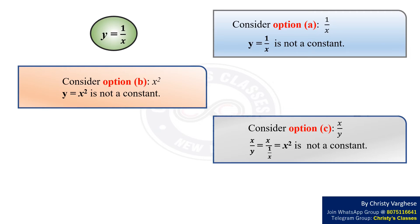In option C, the variable on the ordinate is x by y. Substituting y equal to 1 by x, we get x by y equal to x square. But this is also not a constant, so let us move to the final option.